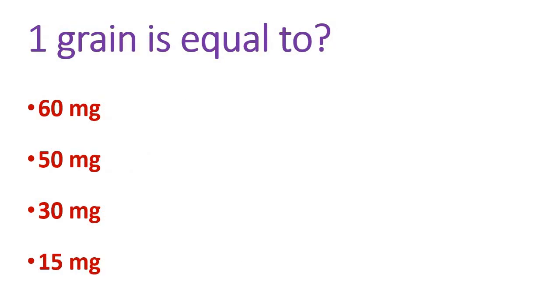Next question: one grain is equal to — the options are 60 mg, 50 mg, 30 mg, and 15 mg. One grain is equal to 60 mg.